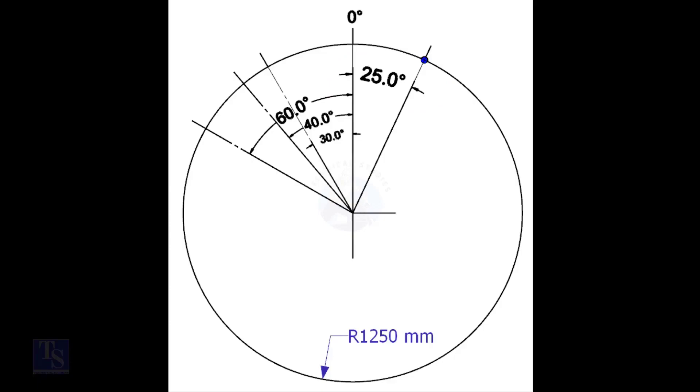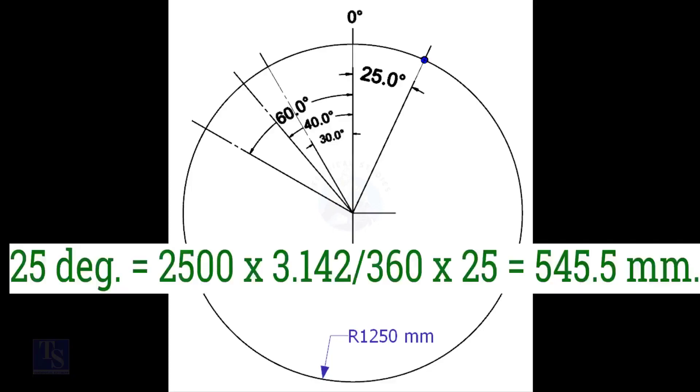We have the included degree and the diameter of the tank. Let us calculate the arc length. Arc length for 25-degree is equal to outer diameter into 3.142 divided by 360 into 25, which is equal to 545.5 millimeters.